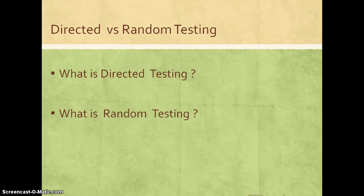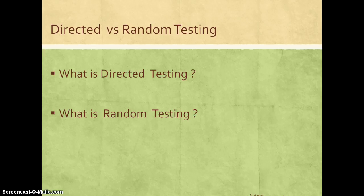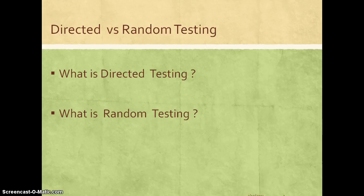In this lecture we will understand more about directed testing versus random testing. Directed testing is an approach where we create tests targeted at a feature or every feature in the design. If there are multiple features that operate under different conditions, we create targeted tests for each. Random testing, on the other hand, is an approach where we depend on a random test generator that can create multiple scenarios in a random manner.